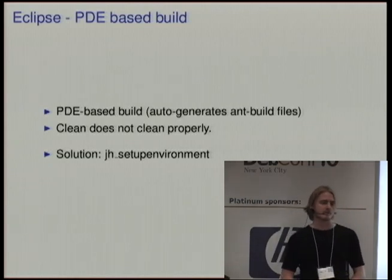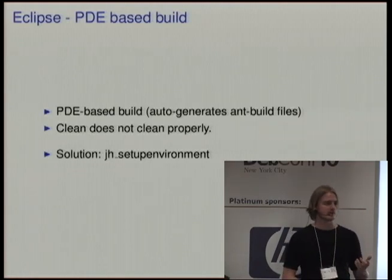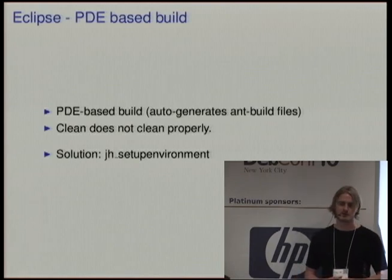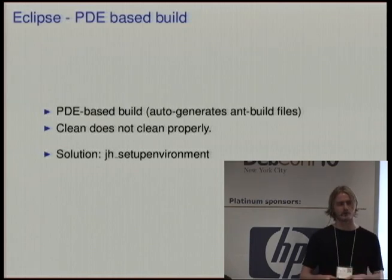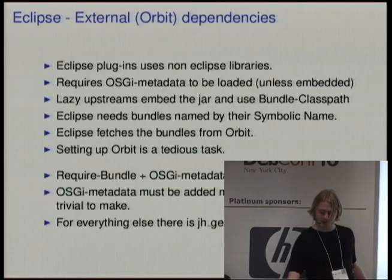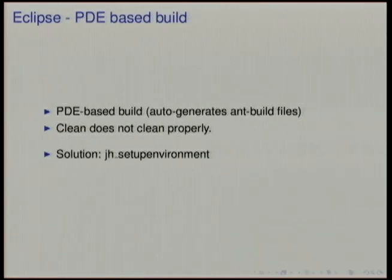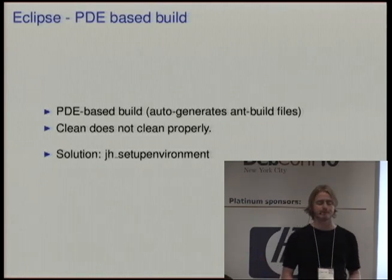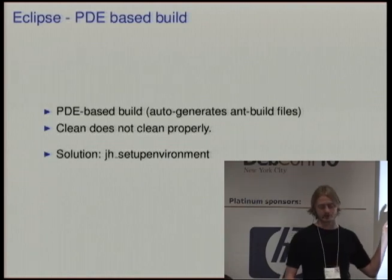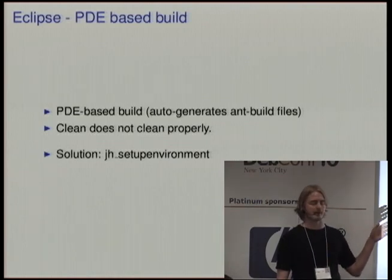The problem is that the clean target doesn't clean up these auto-generated build files, which causes a problem in terms of our requirements for cleaning. The solution today is to simply copy the whole thing into a new directory, build it there, and then remove that directory when done. For that we have jh_setupenvironment, where you simply tell it which files it should copy into a build directory which it will create for you. There is a debhelper file for that.